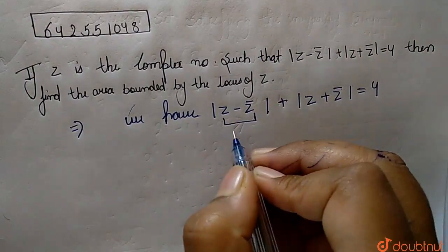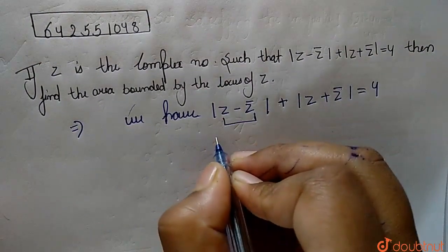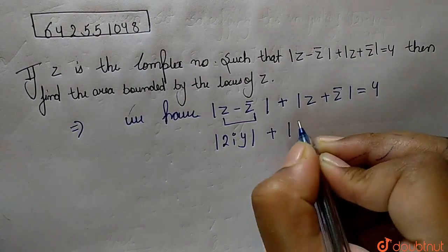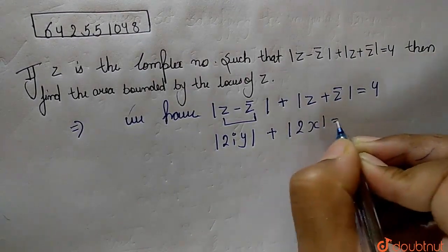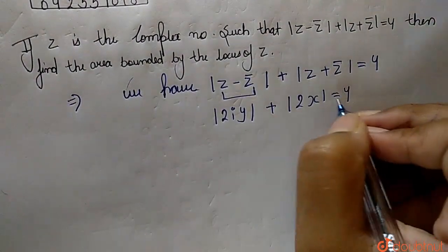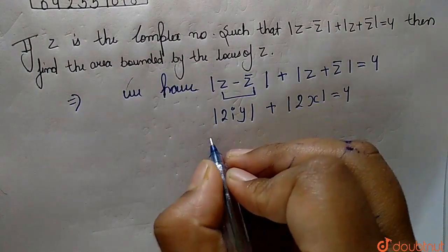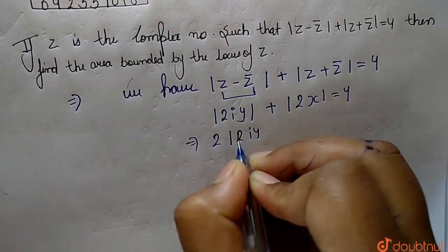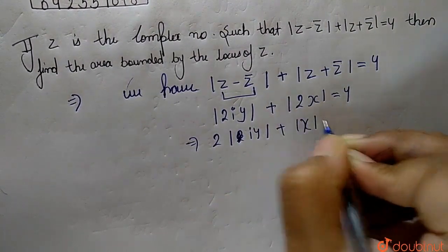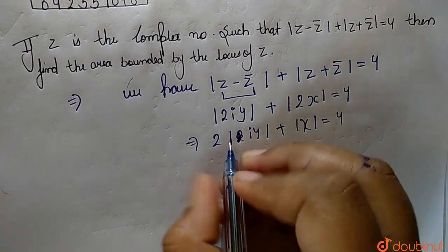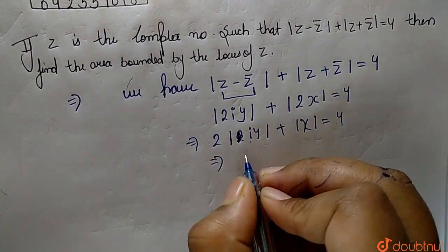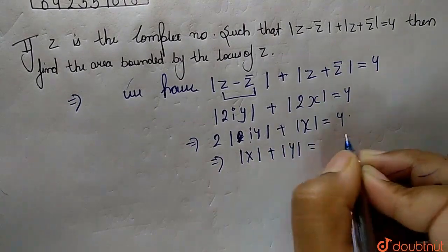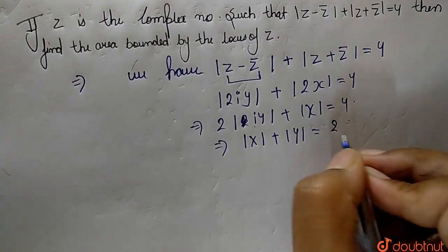We know that the value of |z minus z-bar| is equal to 2|y|, and the value of |z plus z-bar| is equal to 2|x|, so that will be equal to 4. While we do the simplification, we take out 2 as a common, so we have 2 times of (|y| plus |x|) equal to 4. Dividing both sides by 2, we get |x| plus |y| equal to 2.